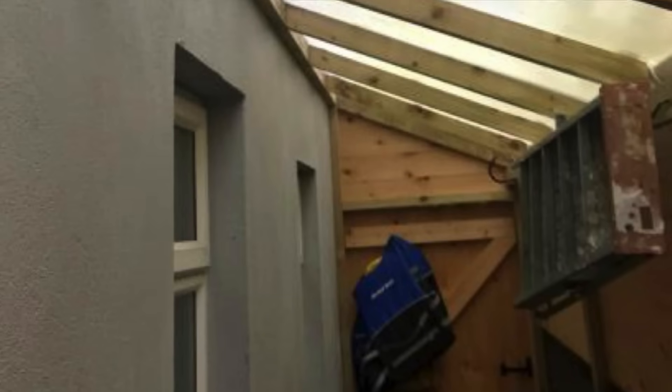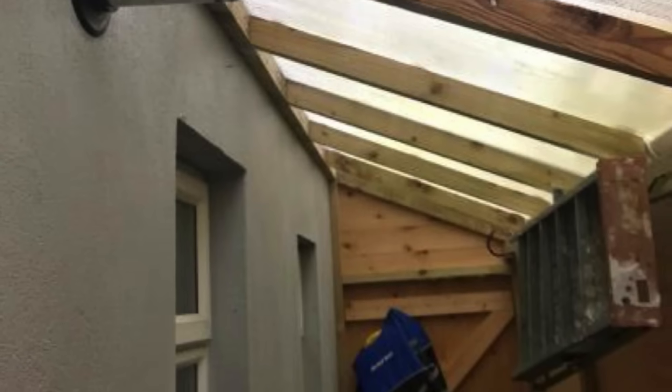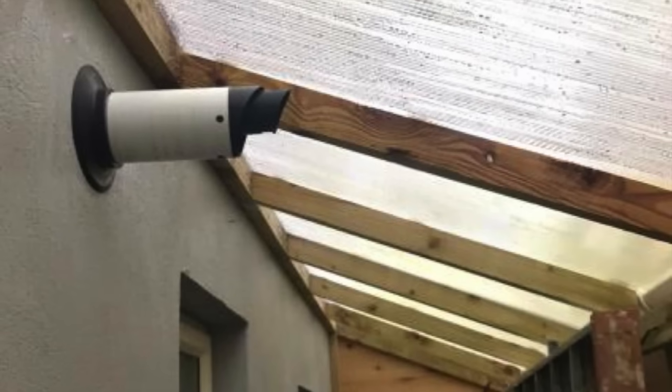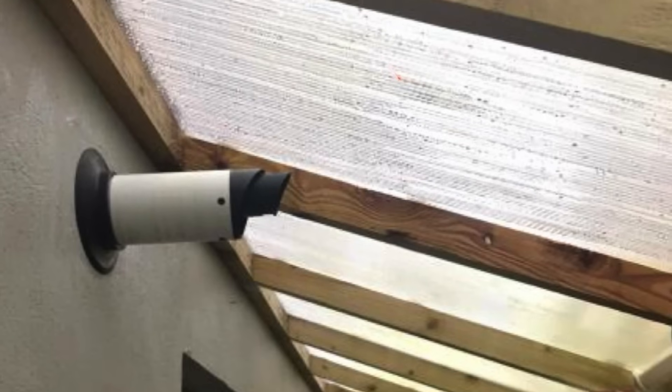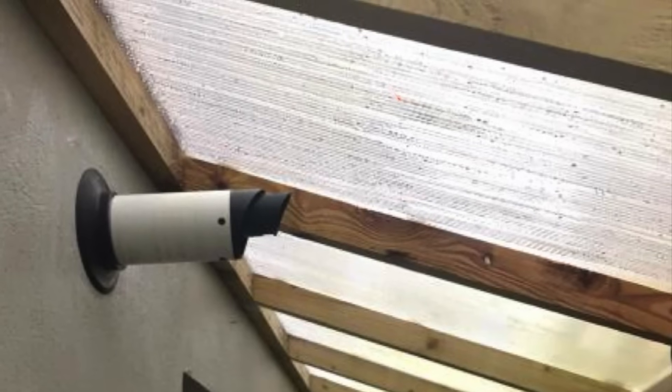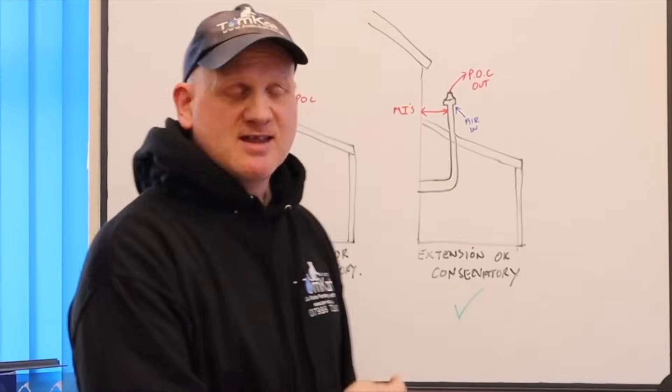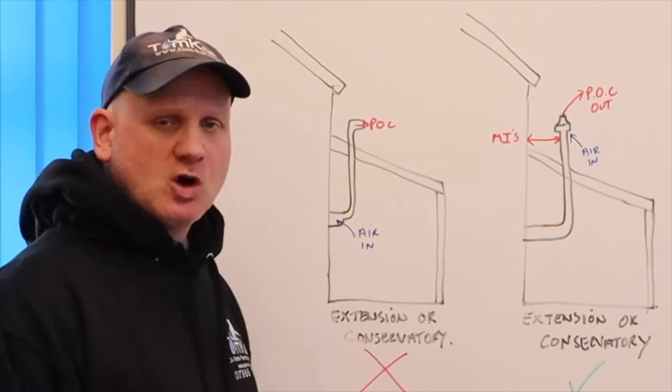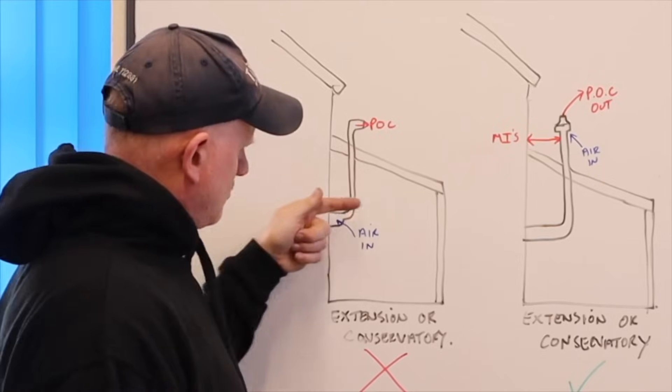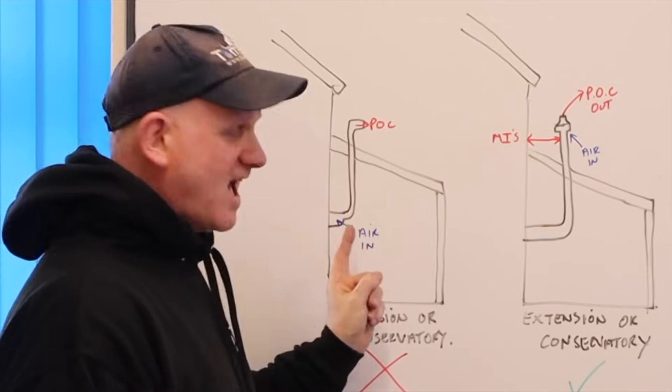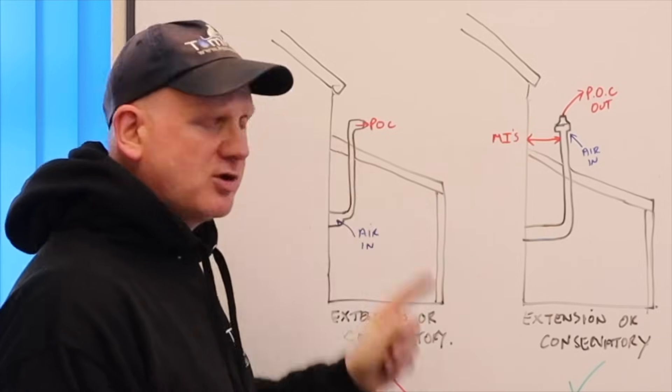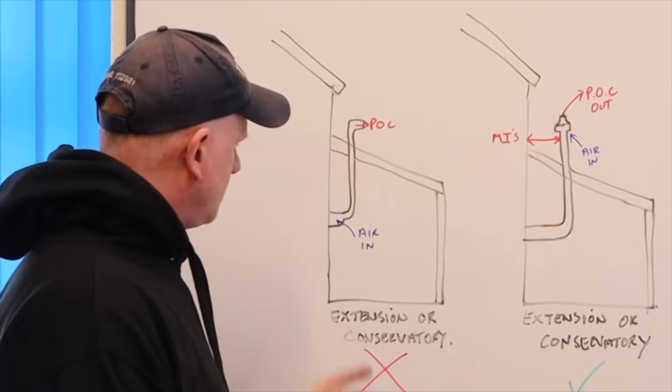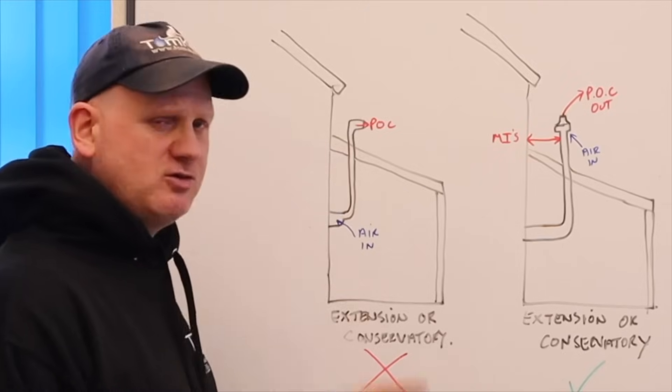Now, in this situation, we've got a little lean-to what's been built onto the side of a house where the flue terminates. Now, can we use a plume management kit to overcome this problem? Now, one of the things you can't do with a plume kit is this. So, this is an extension or a conservatory. And this is the old position of the flue. So, the products of combustion came out here. You cannot use a plume kit to take the products of combustion out through the roof and leave the air intake coming in your kitchen extension or conservatory. You cannot do that.